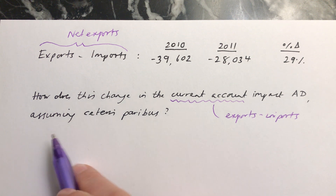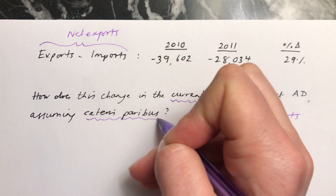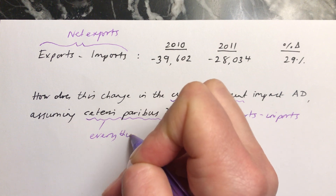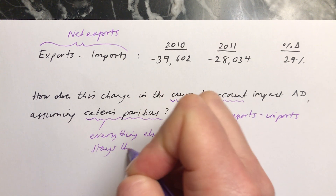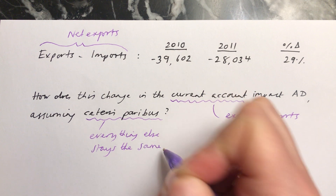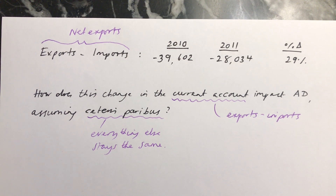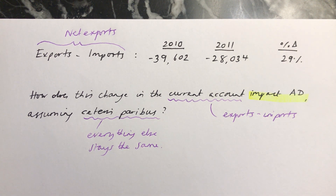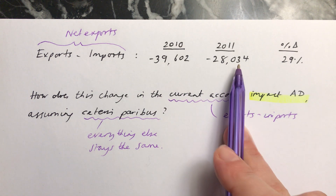And it says assuming Ceteris Paribus. Remember, Ceteris Paribus means everything else stays the same. The key of this question is that it wants to know what's the impact on aggregate demand — so how does aggregate demand change when this change happens?